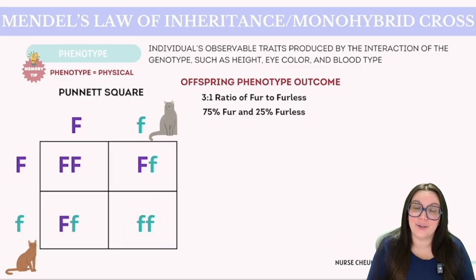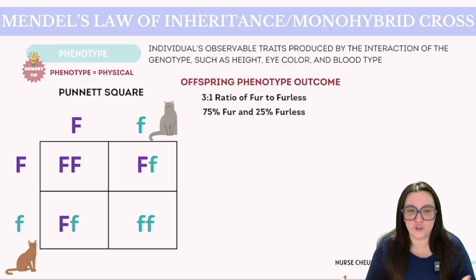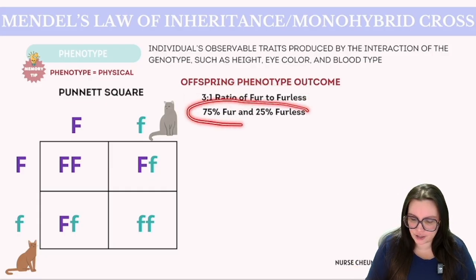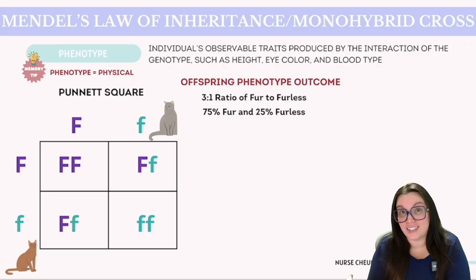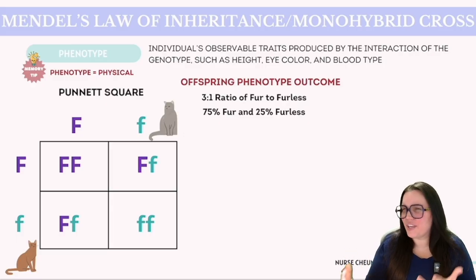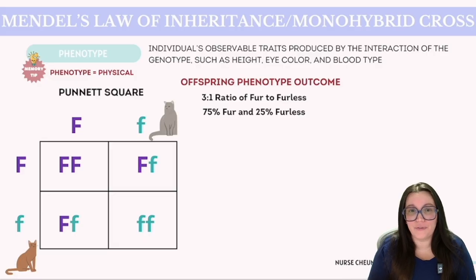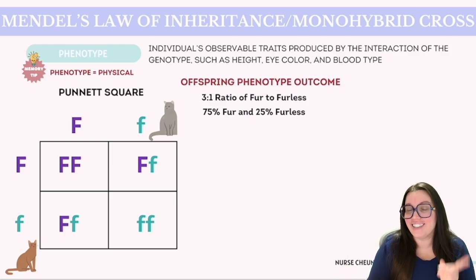Our homozygous recessive kitten — lowercase f lowercase f — ultimately lacks that dominant allele, so this cat is going to result in a hairless phenotype. Therefore, we can describe the phenotype distribution as three furry to one furless, or 75% will have fur and 25% will be hairless. It's crucial to remember that Punnett squares offer predictions based on probabilities, not certainties — they indicate potential outcomes rather than guaranteeing specific results. For instance, while there's theoretically a 50/50 chance of a child being born male or female, many families have only daughters or only sons.